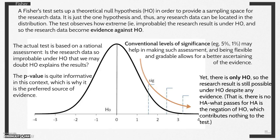Yet, there is only the null hypothesis, so the research result is still possible under this null hypothesis despite any evidence. That is, there is no alternative hypothesis. What passes for the alternative hypothesis is actually the negation of the null hypothesis, which contributes nothing to the test.